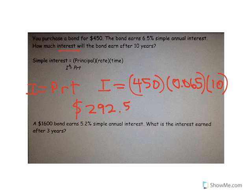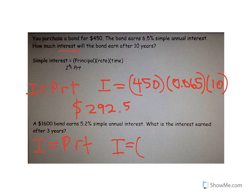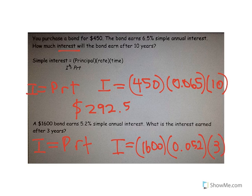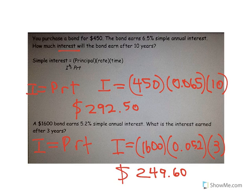It's the same formula for this example: a $1,600 bond earns 5.2% simple annual interest. What is the interest earned after three years? Interest equals principal times rate times time: 1,600 × 0.052 × 3 = $249.60. Put a zero there to indicate dollars and cents. That's simple interest.